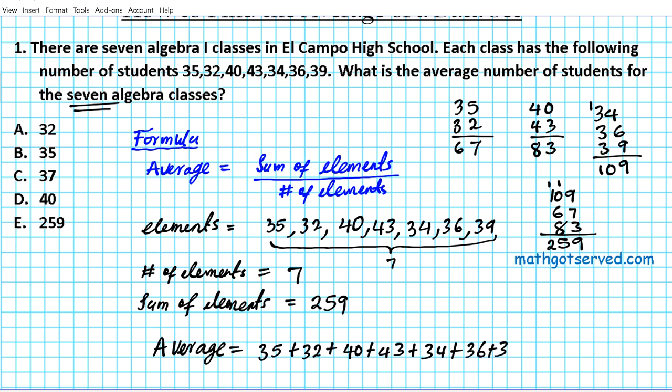So this basically represents the sum of elements, and we're dividing that by the number of elements, which is seven. The numerator component of this quotient has already been computed here, that's what we did on the side, which is 259, and we'll divide that by seven.